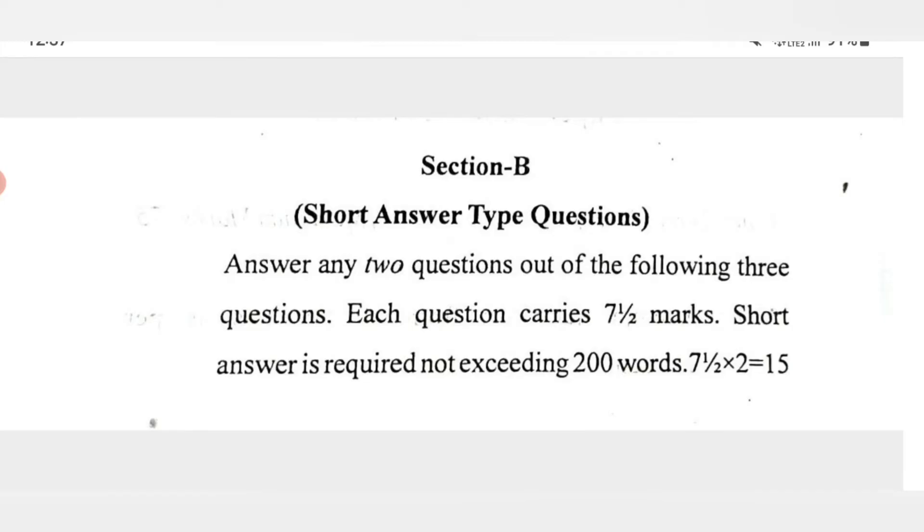Section B is of short answer type questions and you have to answer any two questions out of the following three questions. So aapko us Section B mein three questions diya jayenge jis mein se aapko jo bhi do aate hai woh aapko karne hai.